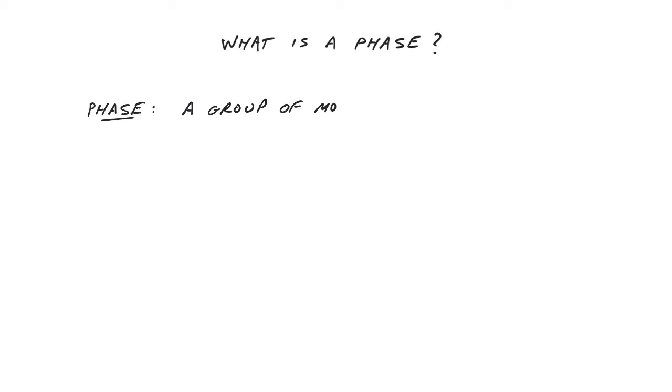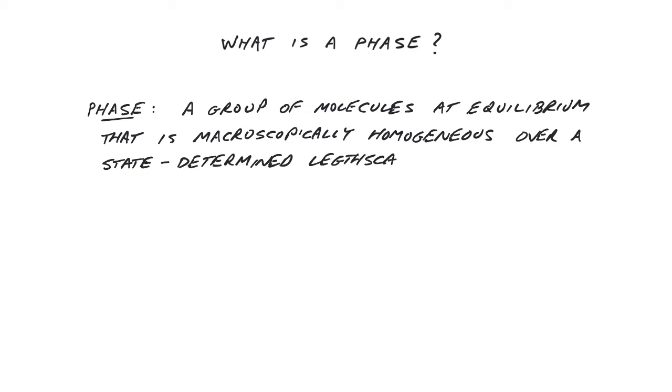Phase: A group of atoms or molecules at equilibrium that is macroscopically homogeneous over a state-determined length scale.